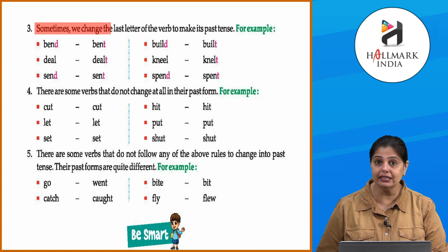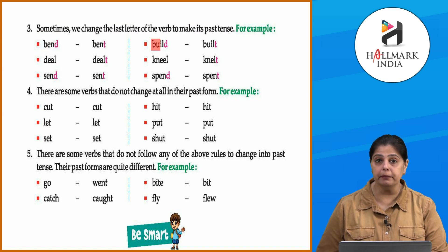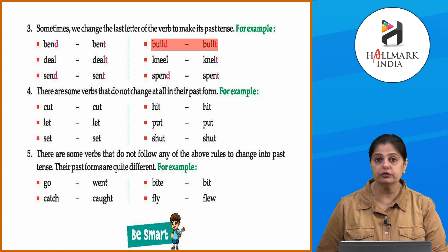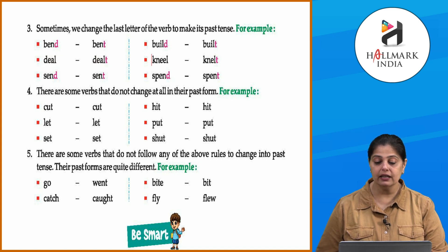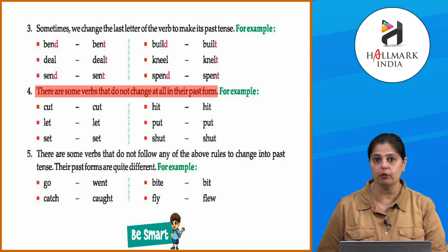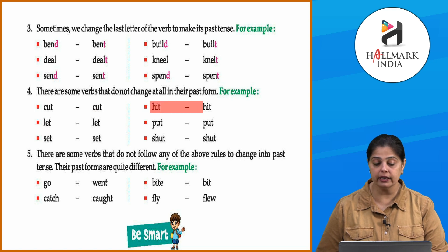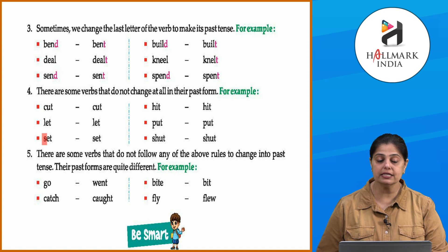Sometimes we change the last letter of the verb to make its past tense. For example: bend → bent, build → built, deal → dealt, kneel → knelt, send → sent, spend → spent. There are also some verbs that do not change at all in the past form — for example: cut → cut, hit → hit, let → let, put → put, set → set, shut → shut.